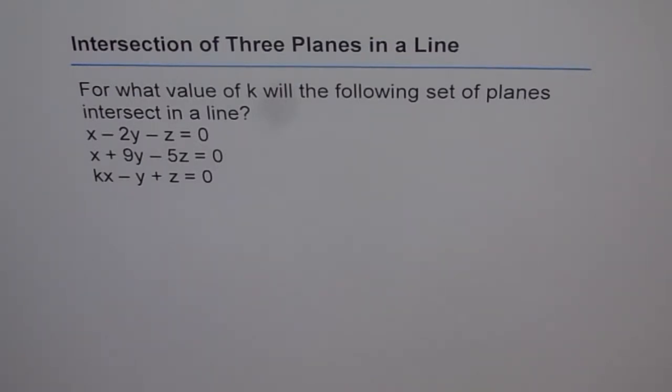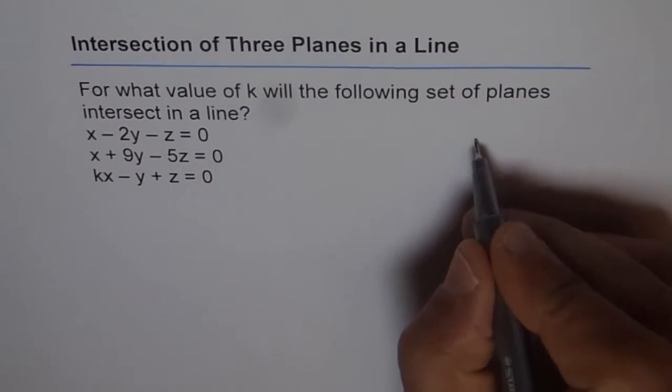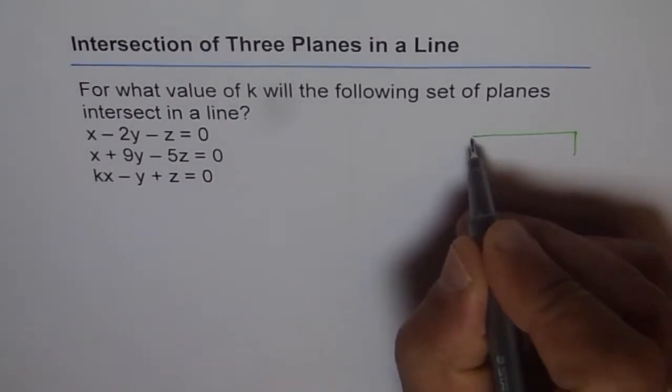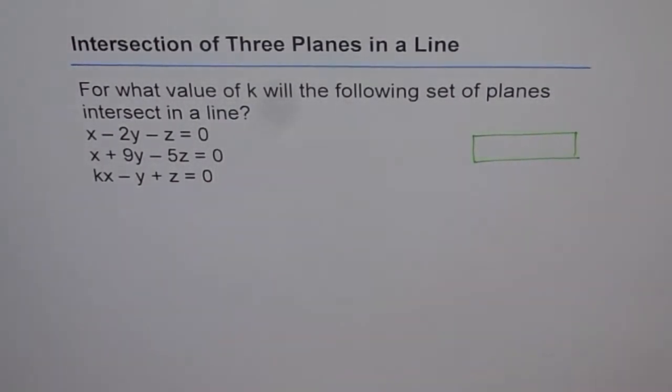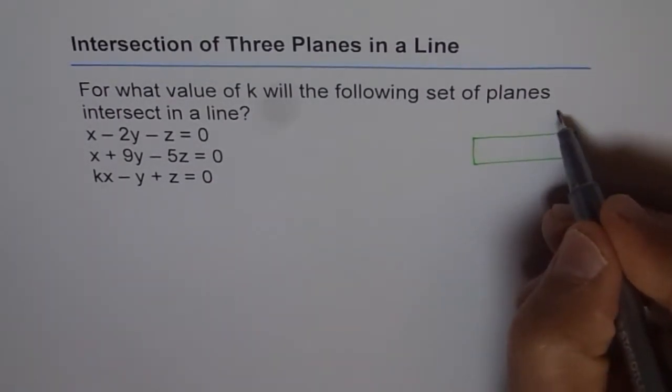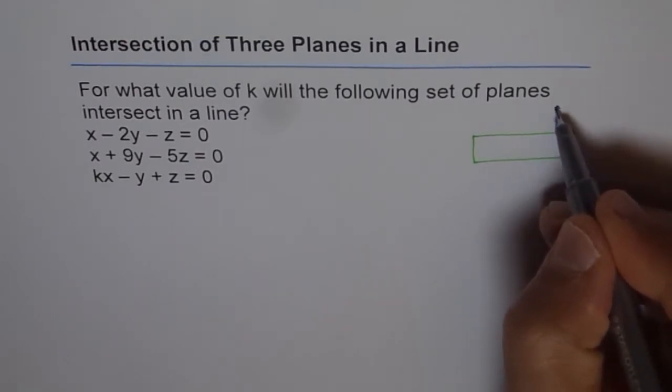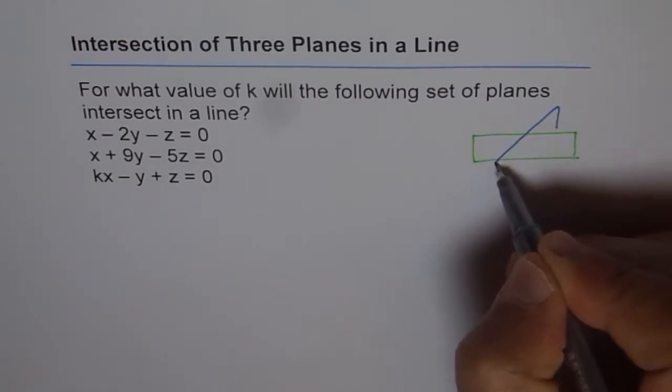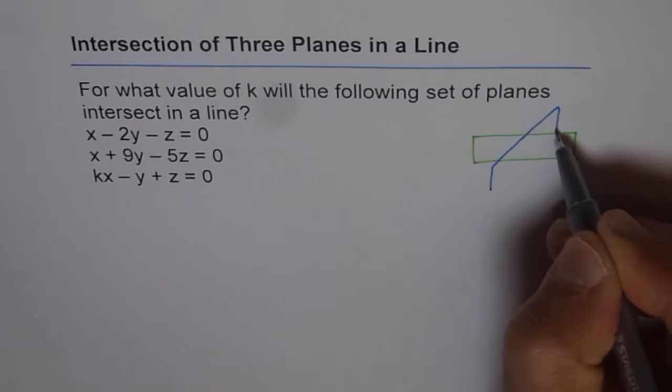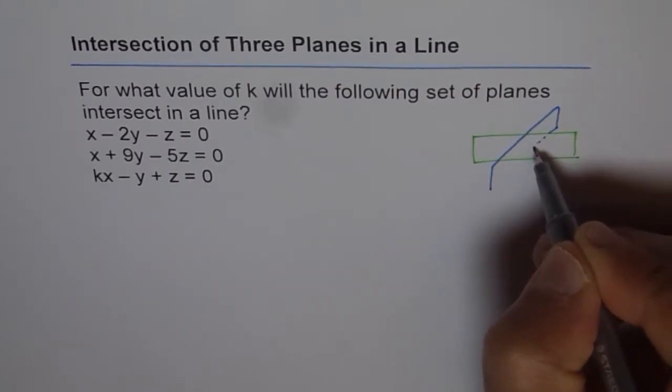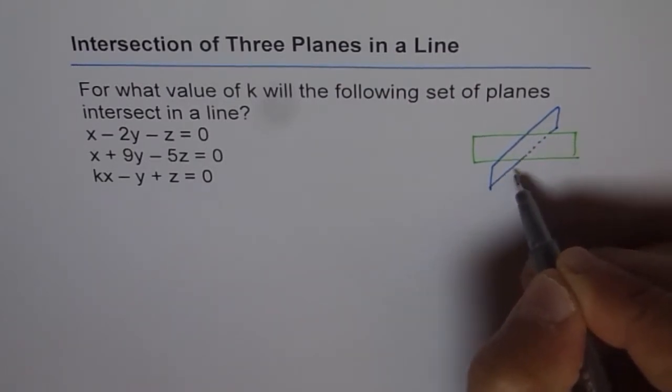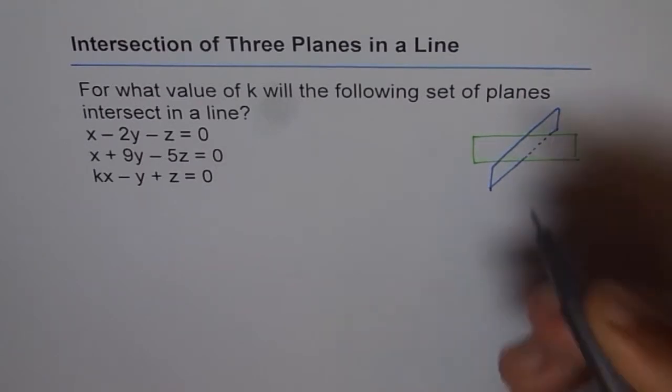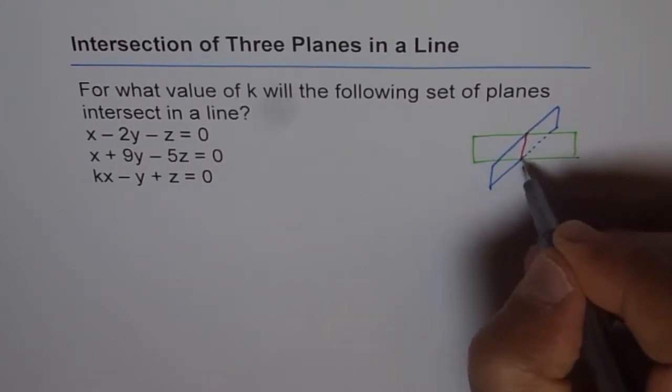For the 3 planes to intersect, for example, we can have planes like this. This is one plane, and then... In that case, the intersection will be this line of intersection.